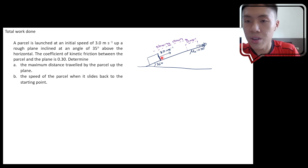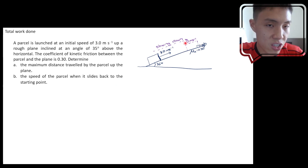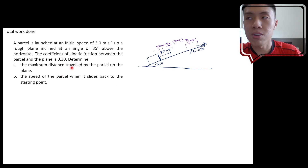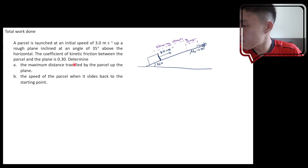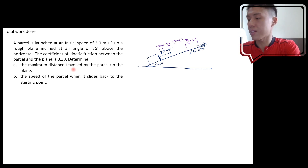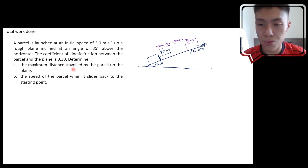Why relate the change in kinetic energy with the total work done? Because from the total work done, we can determine the maximum distance traveled by the parcel up the plane. Let's try to do something with that — first, we determine the free body diagram.